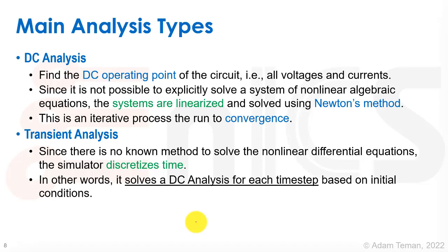The second very, very important analysis is the transient analysis. Since there is no known method to solve the nonlinear differential equations, what we do is we discretize time. So basically what we do is we solve a DC analysis for each time step based on the initial conditions of the circuit. So in other words, we have something that's going on for amount of time. What we do is we assume that each point is just a DC type of a steady state. But with that steady state, we have initial conditions that set what the different operating points of the models are and so forth are at that point. And we just connect them all and we get the transient analysis. We'll be going over that as well.